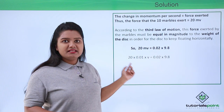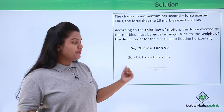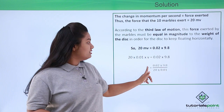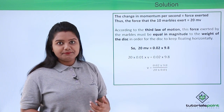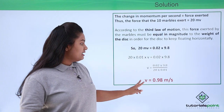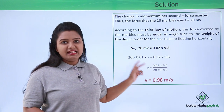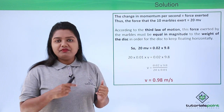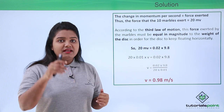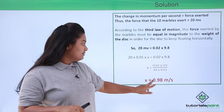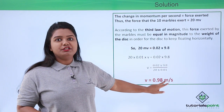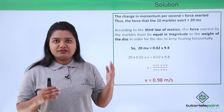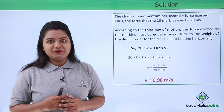From this expression we can easily figure out the value of v: v = (0.02 × 9.8) / (20 × 0.01), which turns out to be v = 0.98 meters per second. So the velocity of each marble with which it was thrown and with which it moves downwards is 0.98 meters per second. This brings us to the end of this video and I hope the solution was fully understandable to you. Thanks for watching.